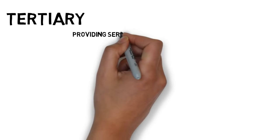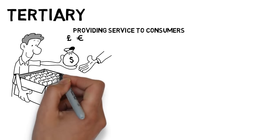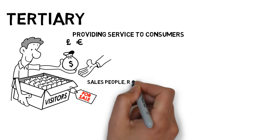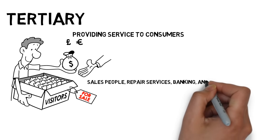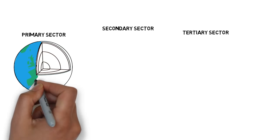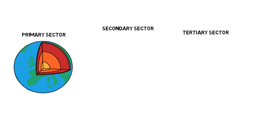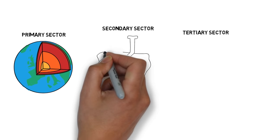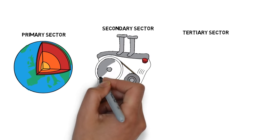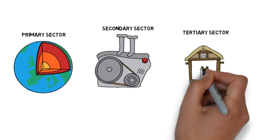Tertiary is the final sector. This sector focuses on providing services to consumers. It enables customers to obtain and use the finished goods. Examples of Tertiary include salespeople, repair services, banking, and insurance. Your local retail businesses are all in the Tertiary sector. To summarize: extracting resources from the Earth is Primary, turning extracted resources into usable goods is Secondary, and providing services is Tertiary.